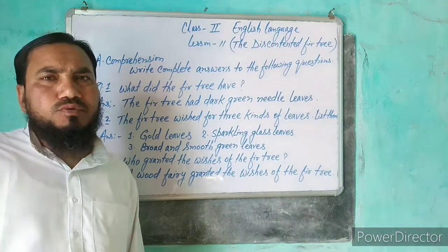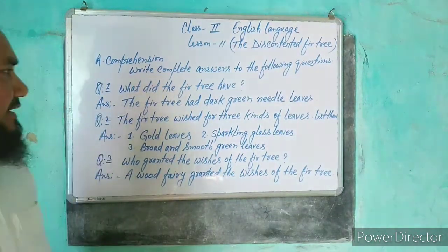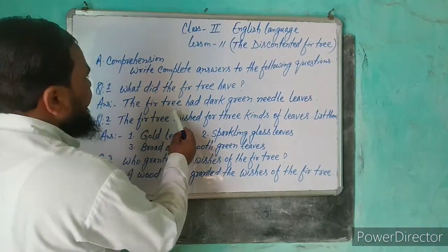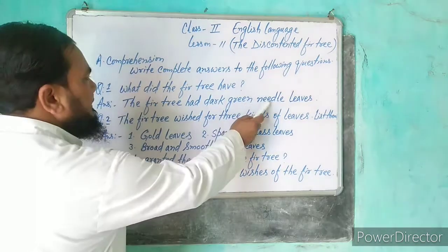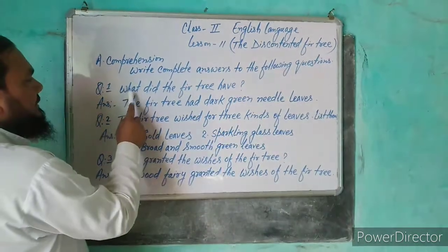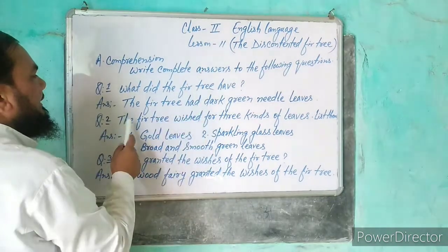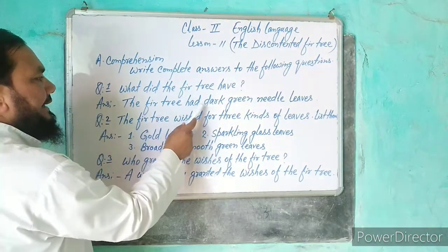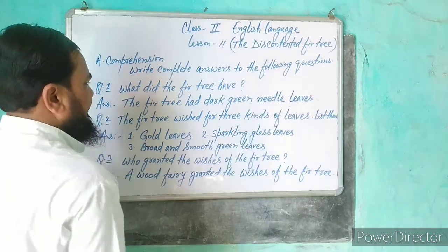Question number 1: What did the fir tree have? Answer होगा: The fir tree had dark green needle leaves.